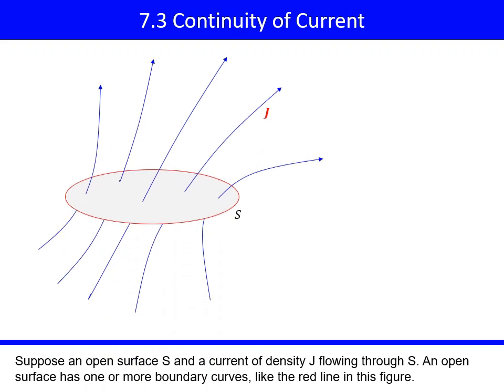Suppose an open surface S and a current of density J flowing through S. An open surface has one or more boundary curves, like the red line in this figure.